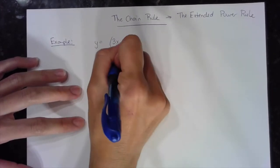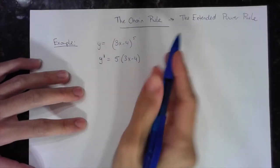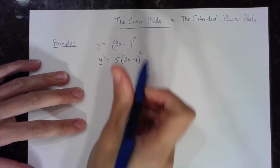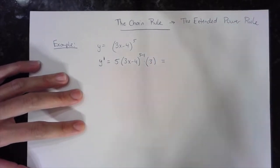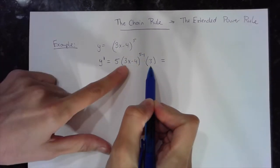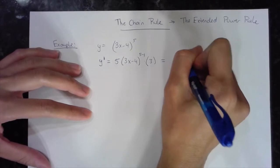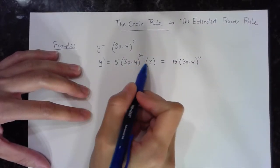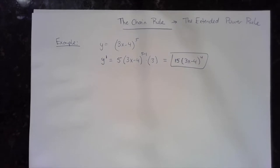I'm going to bring the exponent down to the front. I'm going to keep the base the same, which in this case is 3x minus 4. I'm going to subtract 1 from the exponent, and here's the extended part: multiply by the derivative of the base, which in this case is 3. So I get 15 times the quantity 3x minus 4 to the fourth. This 3 and this 5 get multiplied because they're both outside the parentheses.